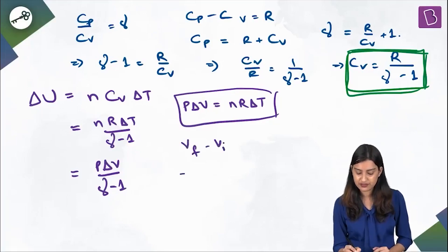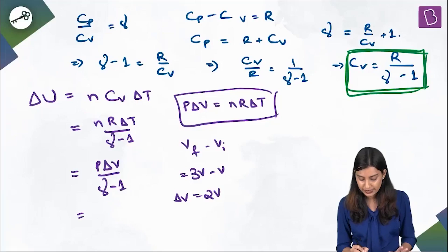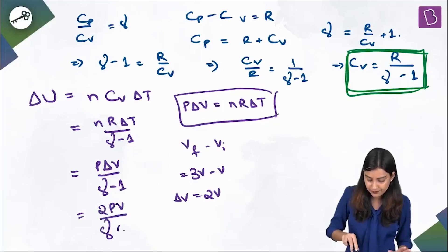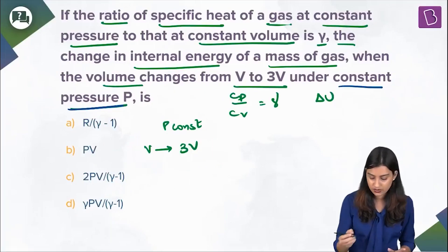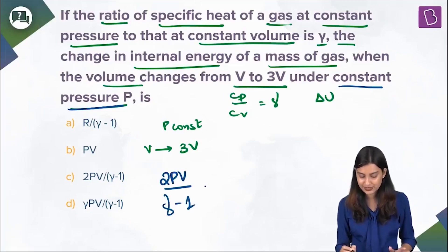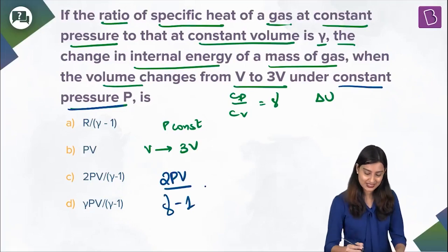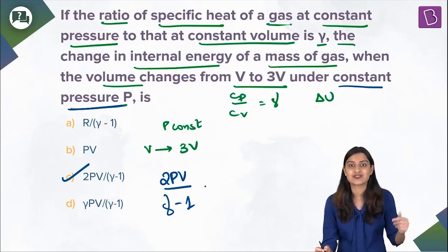ΔV is given as V_final − V_initial = 3v − v = 2v. So ΔU = p(2v)/(γ−1) = 2pv/(γ−1). This is the answer, and you can see it's here in option C. So option C, 2pv/(γ−1), is the right answer to this question.